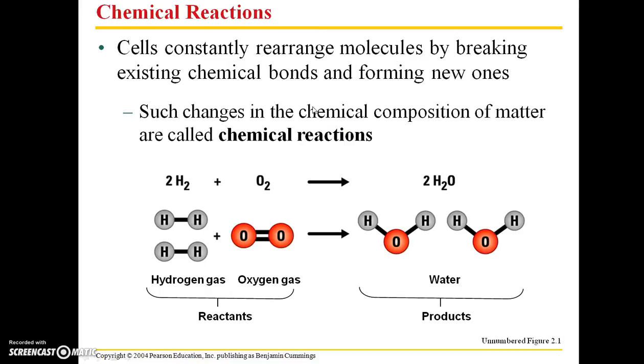So any sort of change in the chemical composition of matter is called a chemical reaction. For example here, in this equation we have hydrogen gas joining with oxygen gas. Together those are the reactants. This arrow signifies that a reaction is occurring. And then on the other side of it, we have our products. In this case, it's simply water.